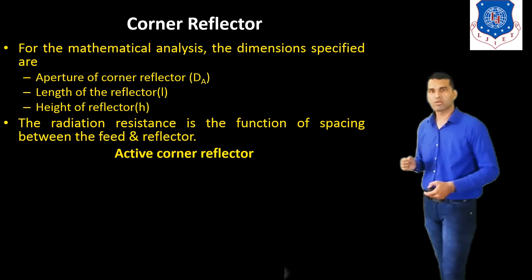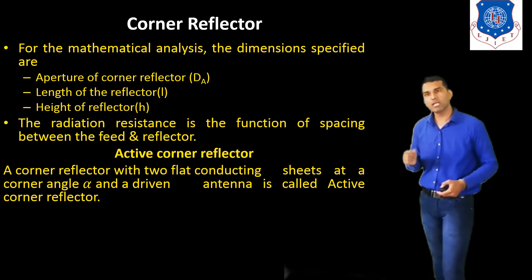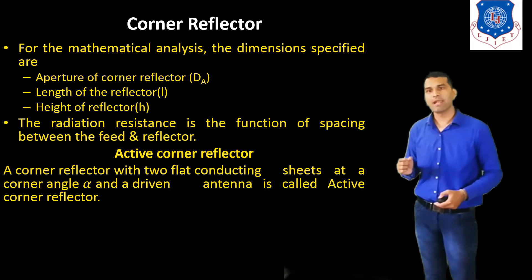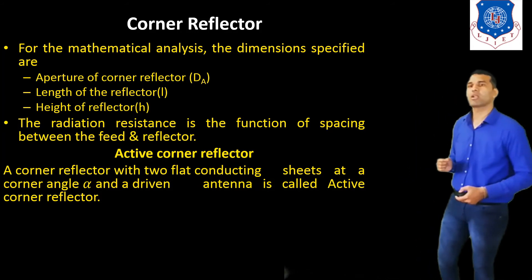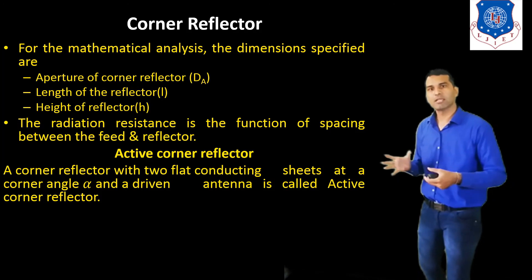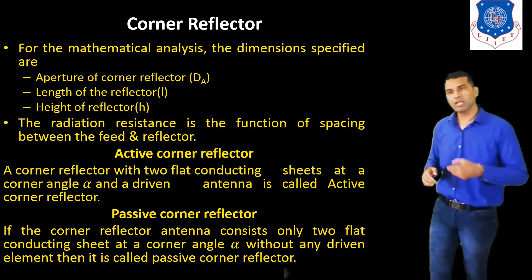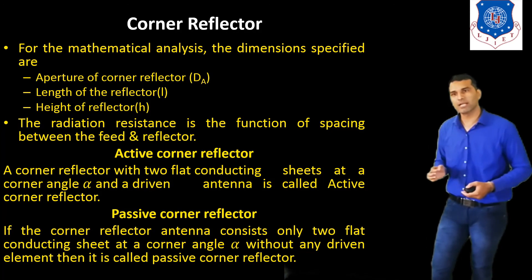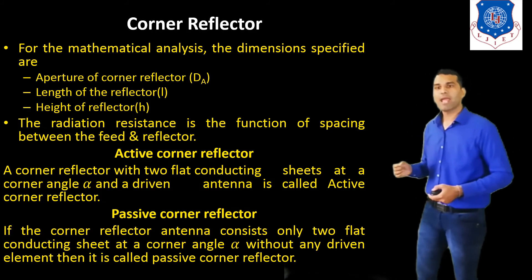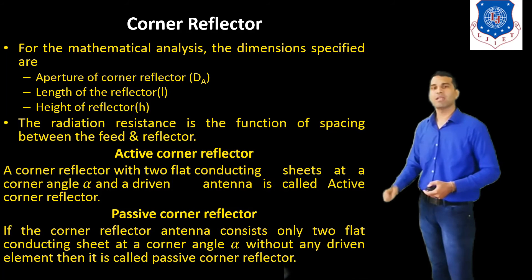Now we discuss about the two types: active corner reflector and passive corner reflector. An active corner reflector is a corner reflector with two flat conducting sheets at a corner angle alpha and a driven antenna element. If we use a driven element in the reflector, it becomes an active corner reflector. The passive corner reflector consists only of two flat conducting sheets at a corner angle alpha without any driven element.